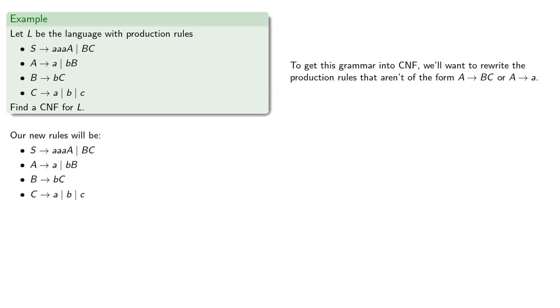Now, to get this grammar into Chomsky Normal Form, we'll want to rewrite the production rules that aren't of the form a variable produces two variables, or a variable produces a terminal.